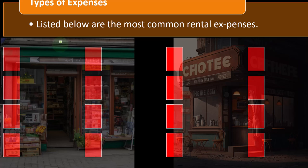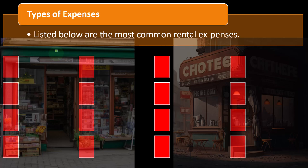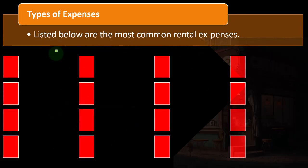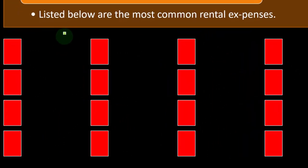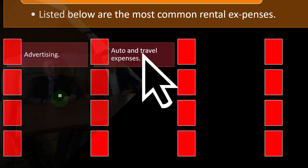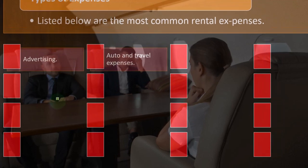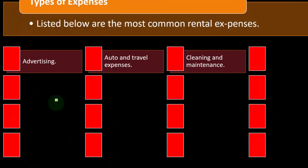We're continuing on types of expenses. Listed below are the most common rental expenses. With rental expenses, it's kind of like the Schedule C situation with business income—they usually make sense. Rental expenses are typically those ordinary and necessary expenses you needed in order to generate the revenue, so that we're taxed on net income as opposed to gross income. The expenses will be those common to owning rental property. So advertising is a common expense for just about any type of business. Auto and travel expenses get a bit confusing—are we going to use a mileage method or direct method, and do we depreciate autos?